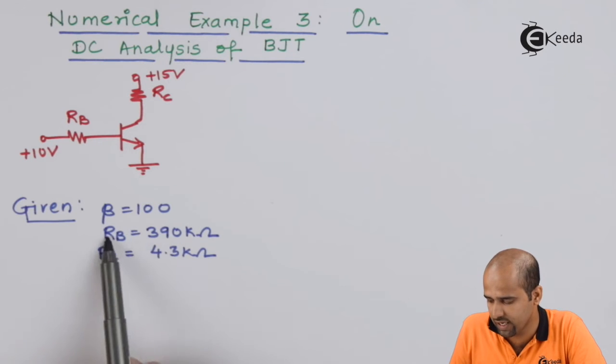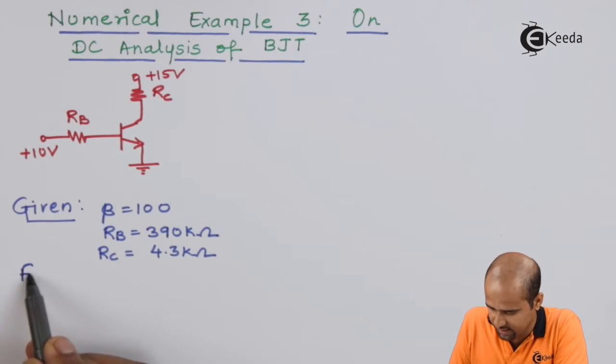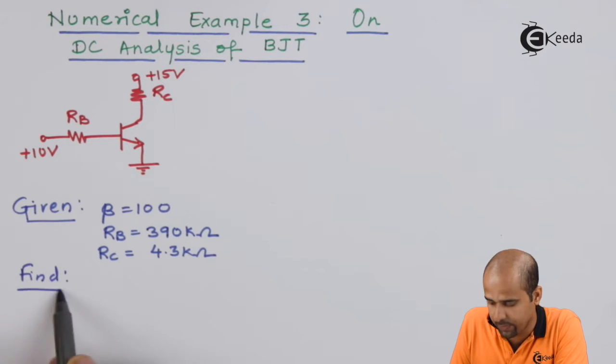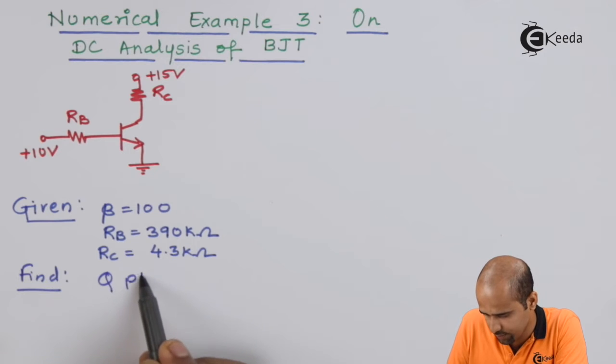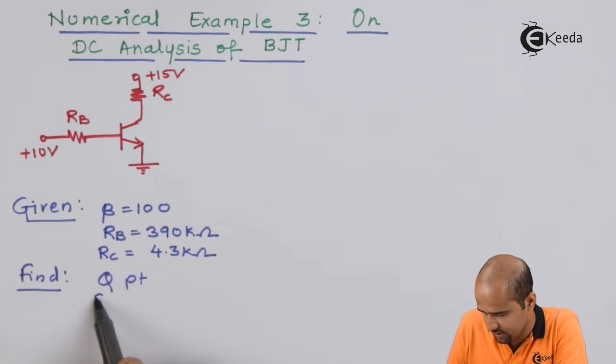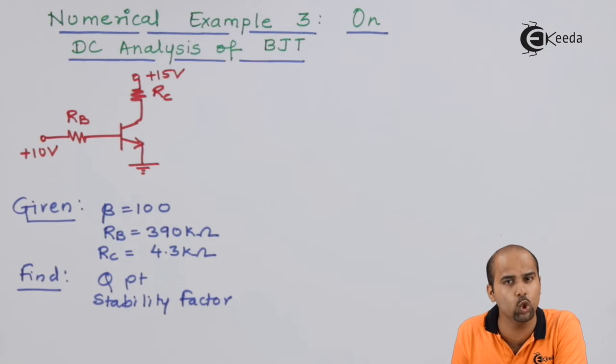Given: beta equals 100, RB equals 390k, RC equals 4.3k. Find: Q point, stability factor, and design the value of RE to get stability factor equal to 80.